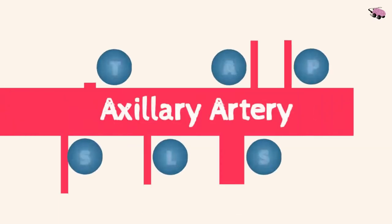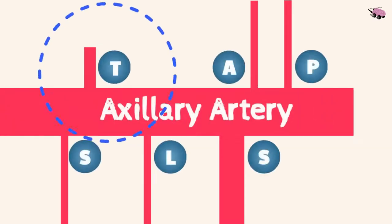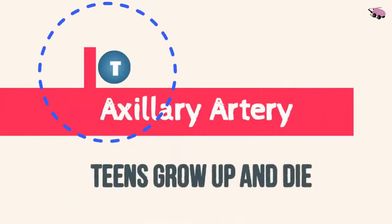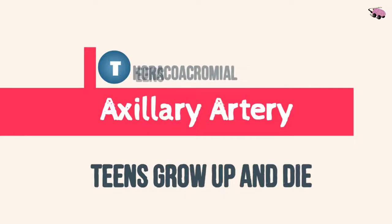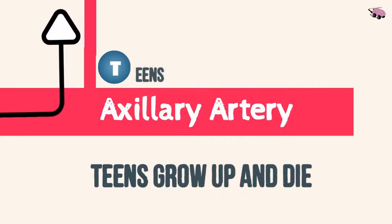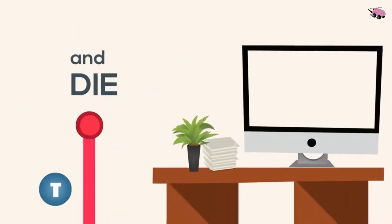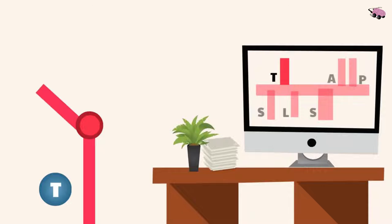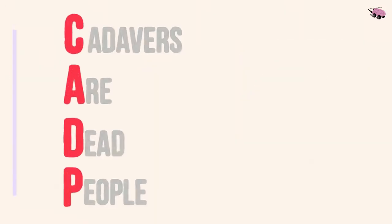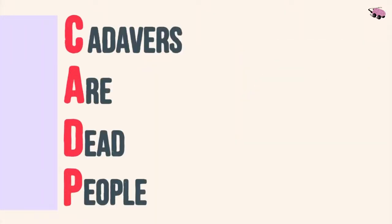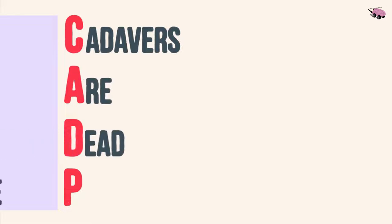Teens — the thoracocomial trunk. We'll remember this by: teens grow up and die, splitting into four sub-branches: C, A, D, P. We can remember this by the mnemonic: cadavers are dead people.